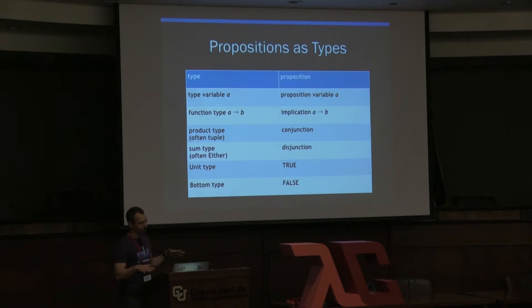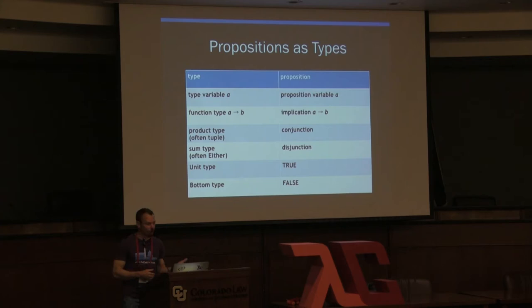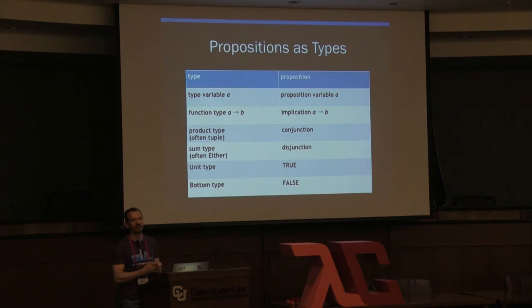Propositions as types — this is the core of the isomorphism. A type variable corresponds to a propositional variable. A function type A to B corresponds to implication A implies B. A product type corresponds to logical conjunction, and we'll often use a tuple for that. A sum type corresponds to disjunction, and we'll often use Either for that. A unit type corresponds to logical true, and a bottom type to false.